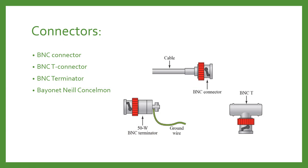The BNC connector is used in TV sets when connecting dish antennas — that wire is connected with the BNC connector. The BNC T-connector is used to connect a computer in an Ethernet network. The BNC terminator is used at the end of the cable to prevent the reflection of signals. So these three types of connectors are used in coaxial cable.